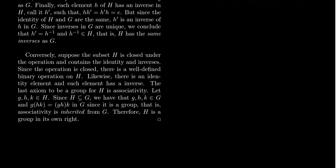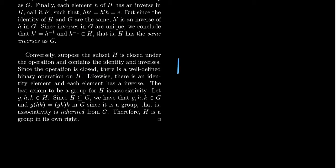Now let's go the other way. Suppose H satisfies the three conditions: it's closed under multiplication, closed under the identity, and closed under inverses. Since the operation is closed, this gives us a well-defined operation on H. The closure principle says we can restrict the operation to get H×H→H, so the product of any two elements of H is well-defined and remains inside H.